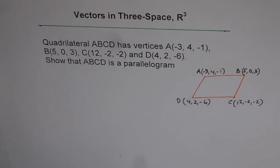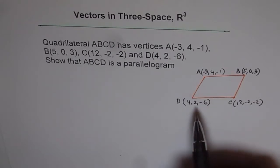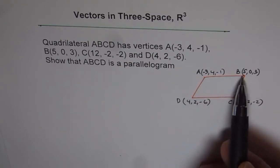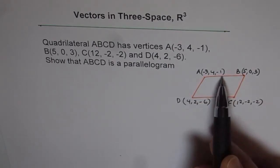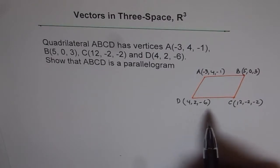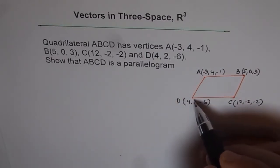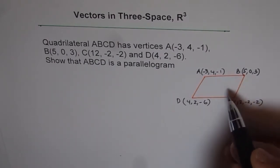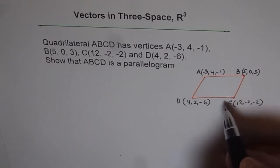We are given vertices of a quadrilateral. To prove that this quadrilateral is a parallelogram, we should prove that AB is parallel to DC and is also equal to DC. Similarly, we have to prove that DA is parallel to CB and is equal to CB.